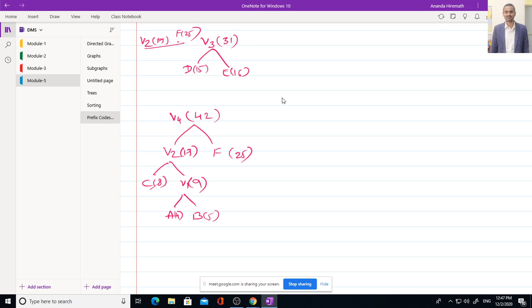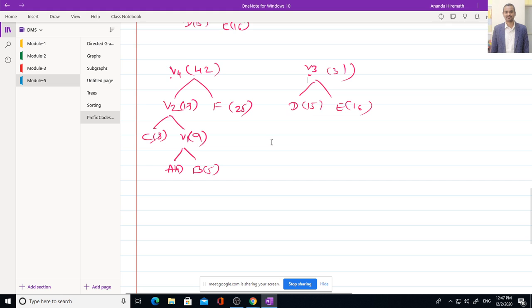V3 is still left, so V3 should be written here. It is 31, combination of D and E. Finally, there are only two nodes in the list: V4 and V3. We should represent in ascending order. So V3 should be written first, then V4. After that, we will have final node. What is root node? Let it be V5.